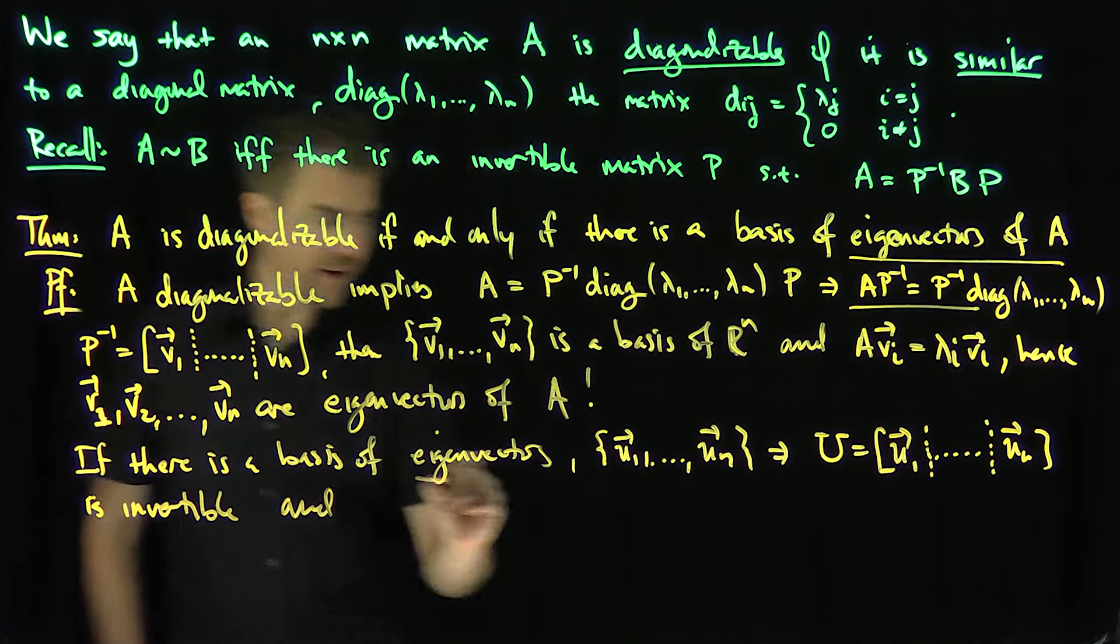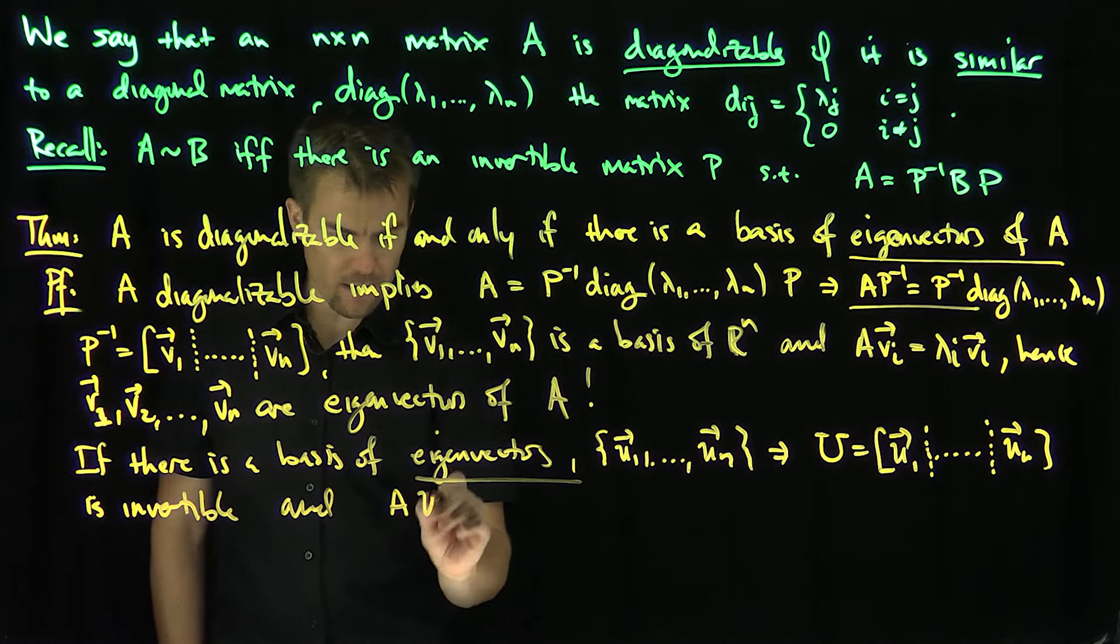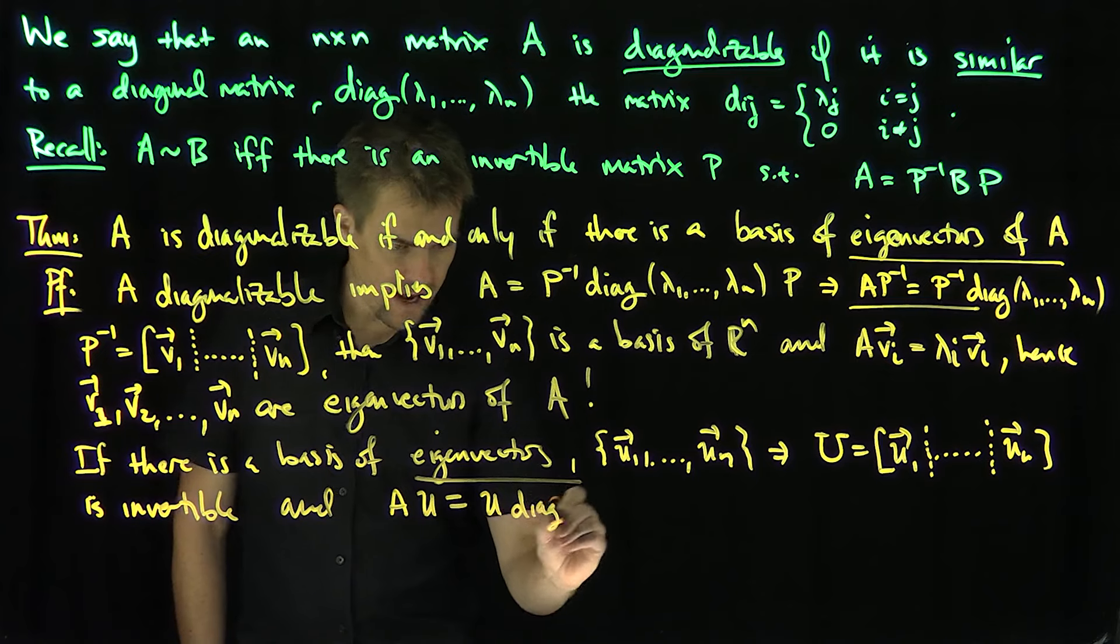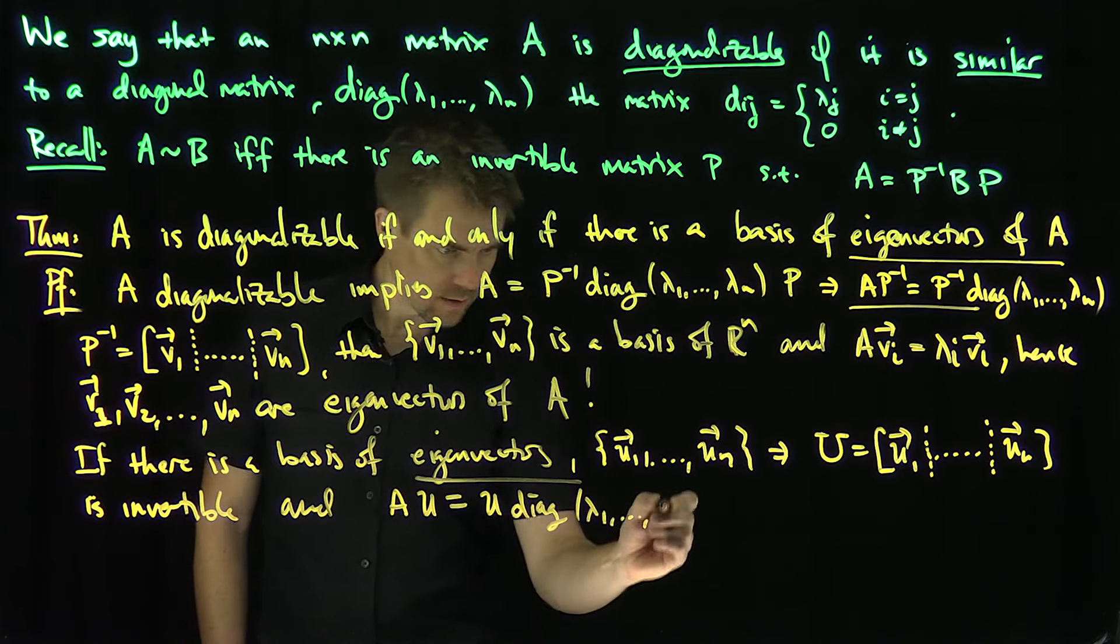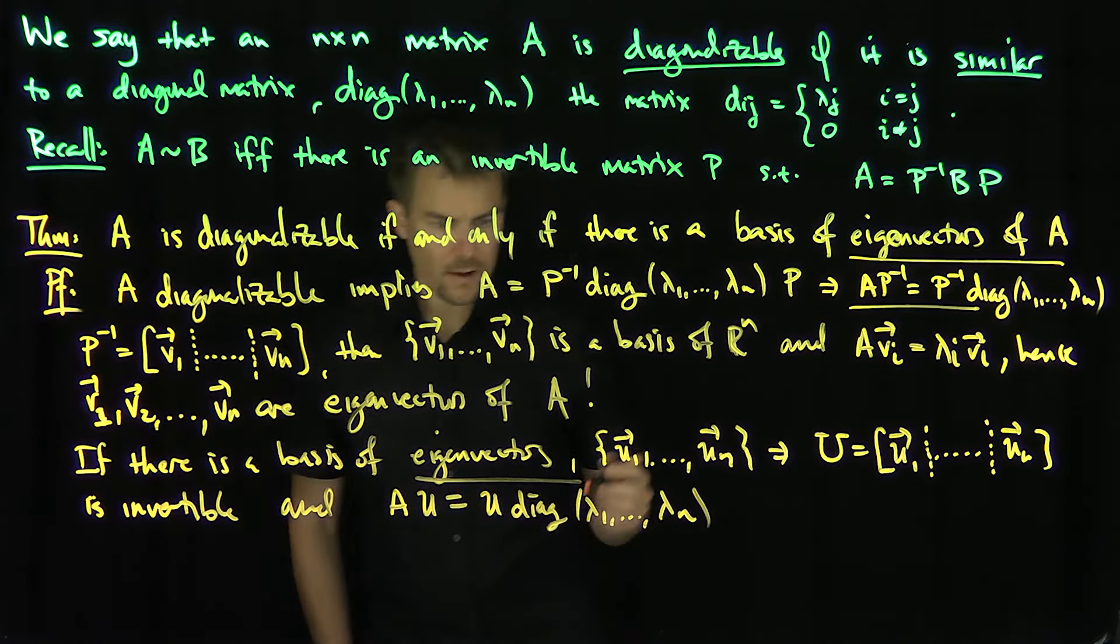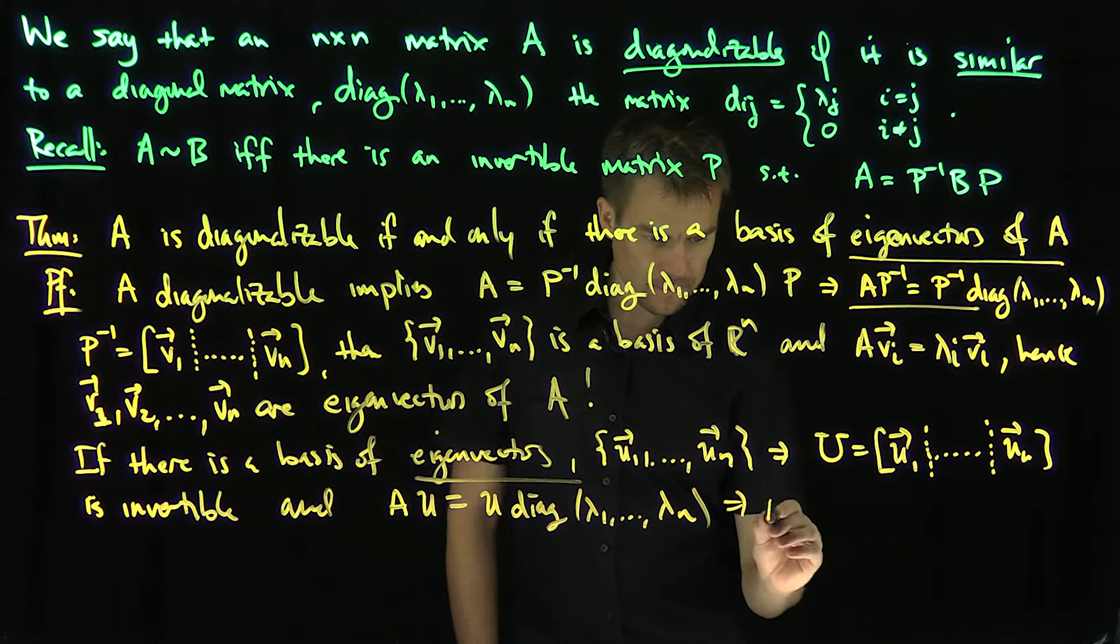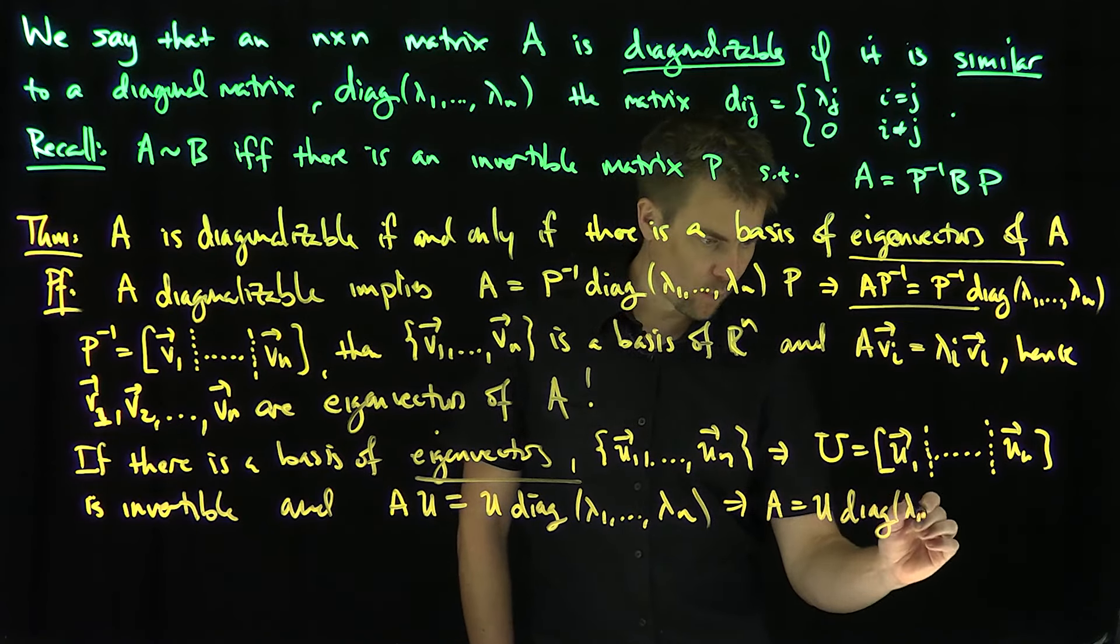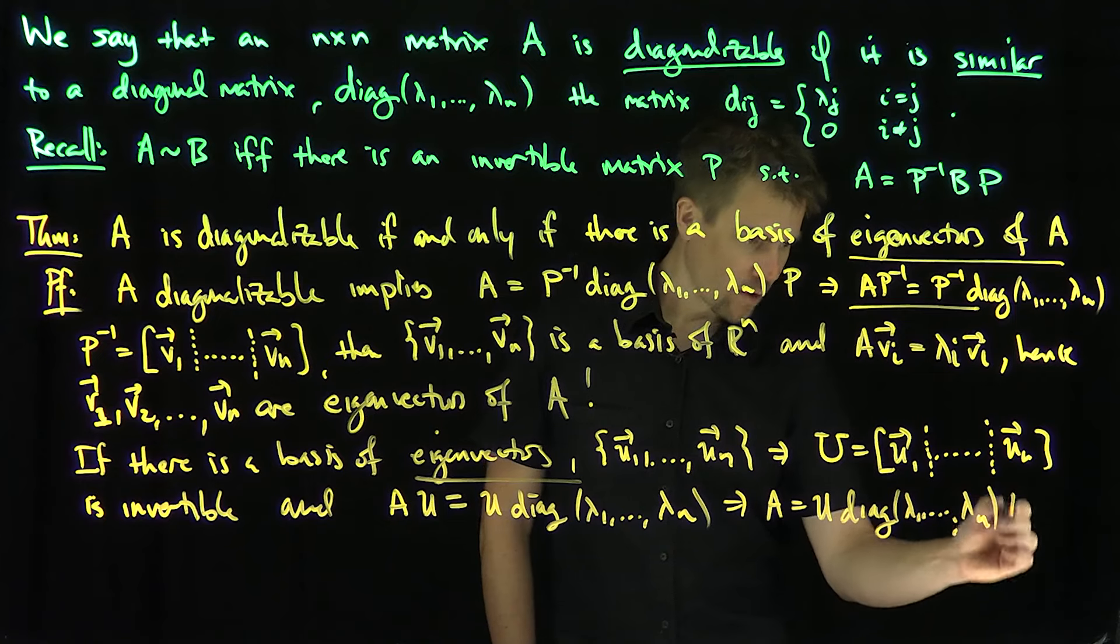And they're eigenvectors, so I have the equation that AU equals U times diag(λ₁,...,λₙ). And that says that A equals U diag(λ₁,...,λₙ)U⁻¹.